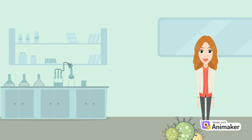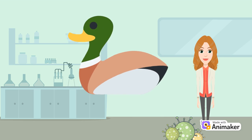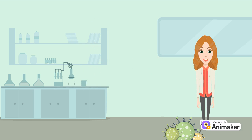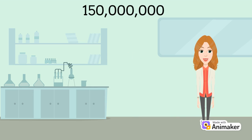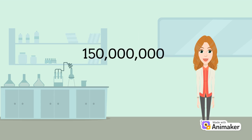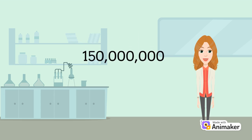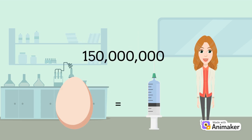Influenza virus is actually a pathogen of waterfowl, the natural reservoir for influenza viruses. The virus likes that environment and it will grow to very high titers — which is just another way of saying amount. The U.S. typically makes 150 million doses of influenza virus vaccine, and one egg can produce one dose of vaccine.